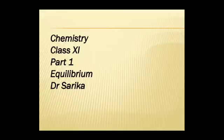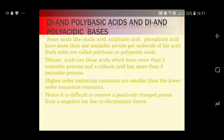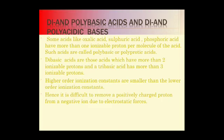Welcome students. Today we continue Class 11th Chapter Equilibrium, Part 3. In the last lecture we covered the ionization constant of acid. As we know, acids and bases have ionization constants. Ionization means the rate of reaction — the rate of formation of product divided by rate of reactant, measured at constant temperature. The larger the value of the constant, the stronger the acid or base.